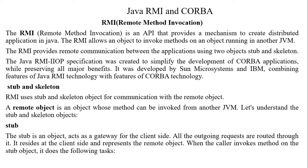For example, machine A is what we call the client and machine B is what we consider the server. With the help of RMI, a client running on machine A can invoke a method running on machine B, which is the server machine.